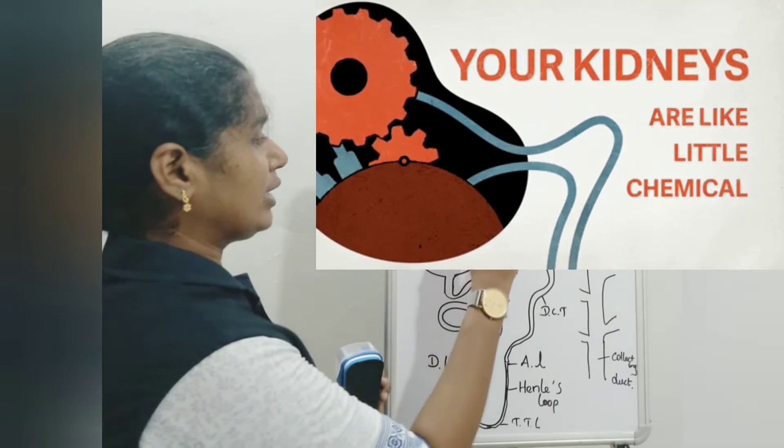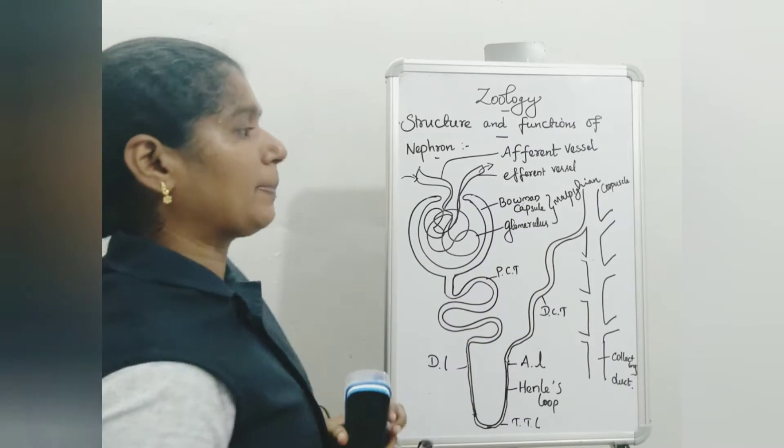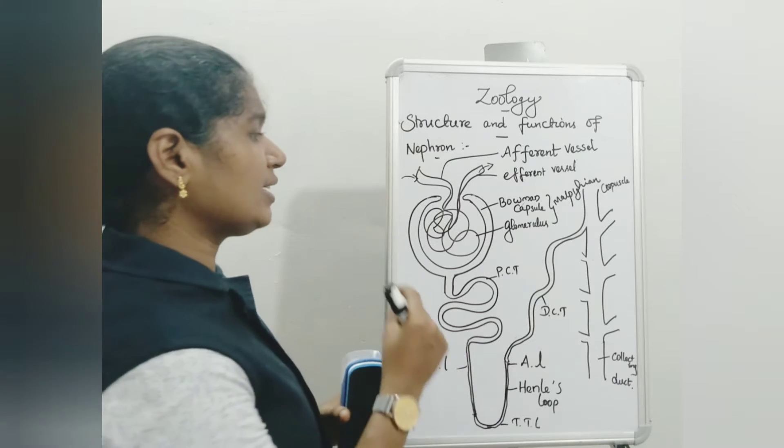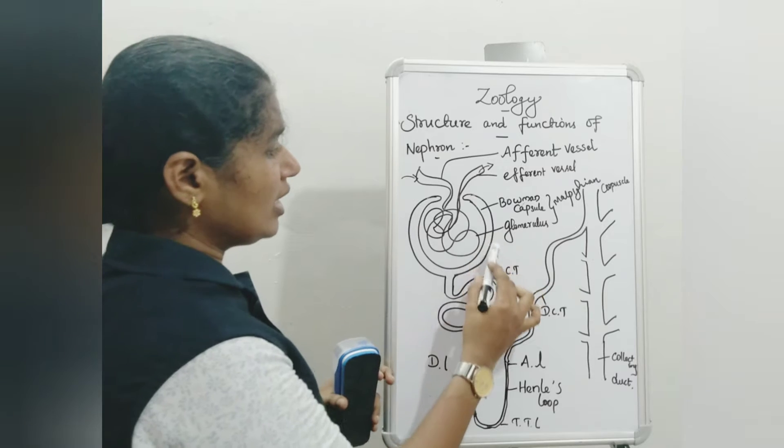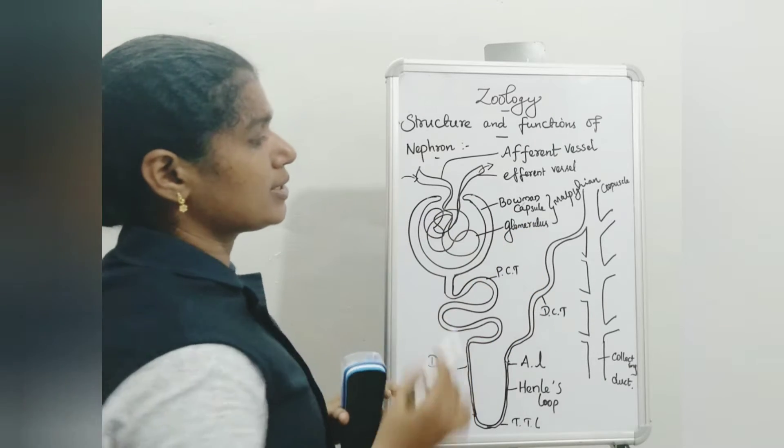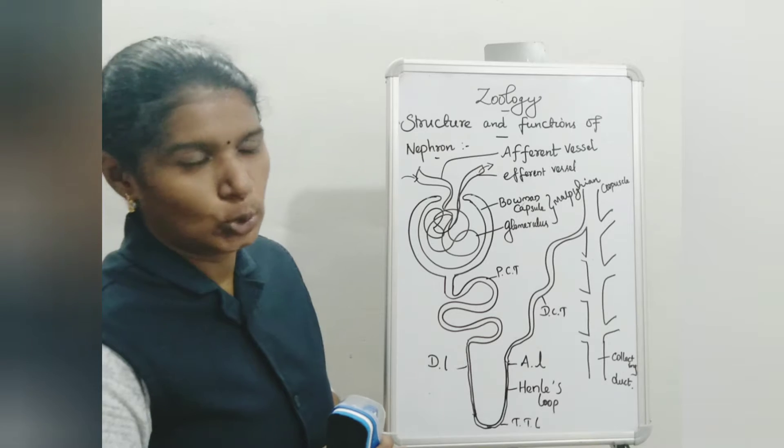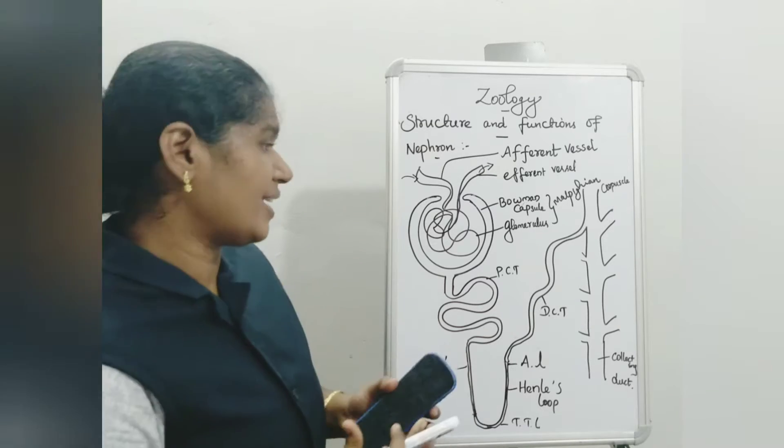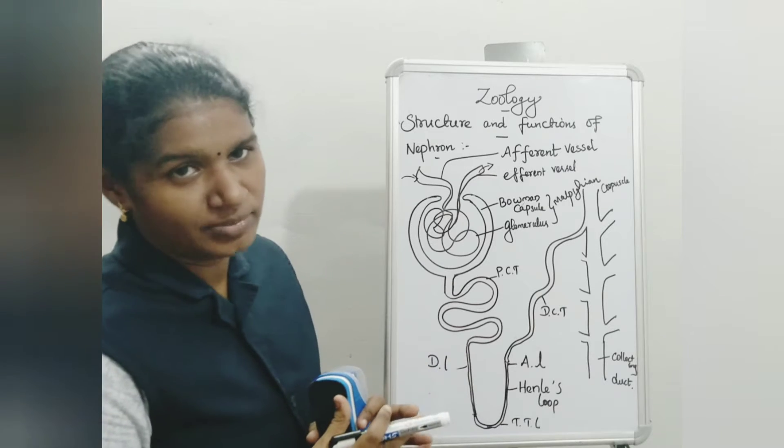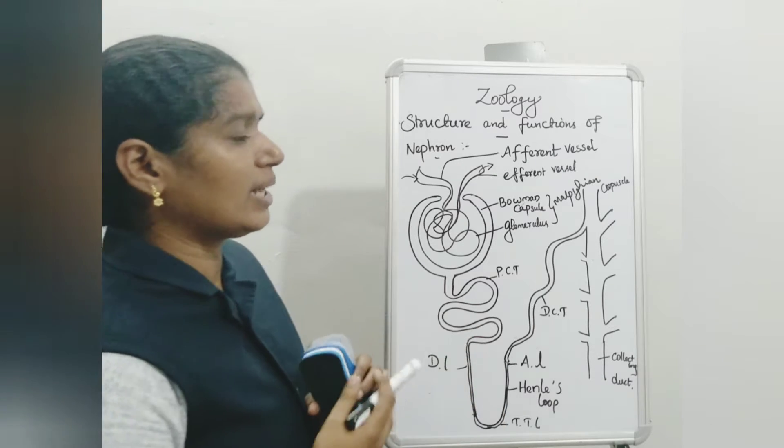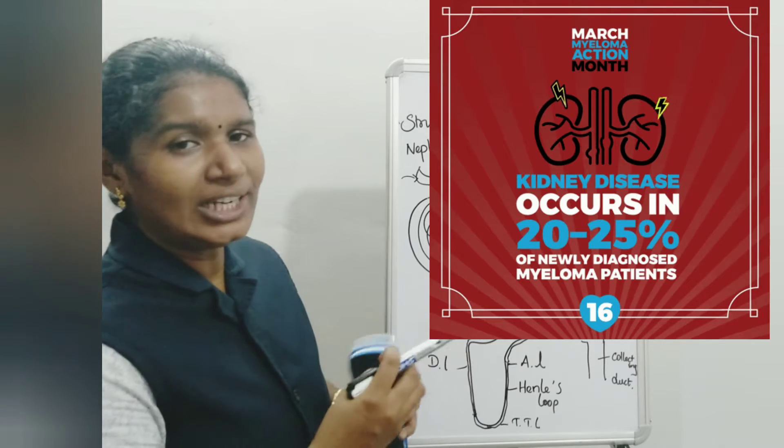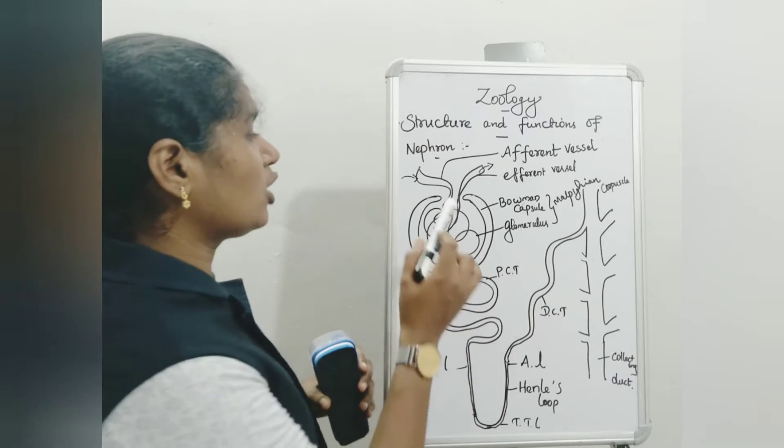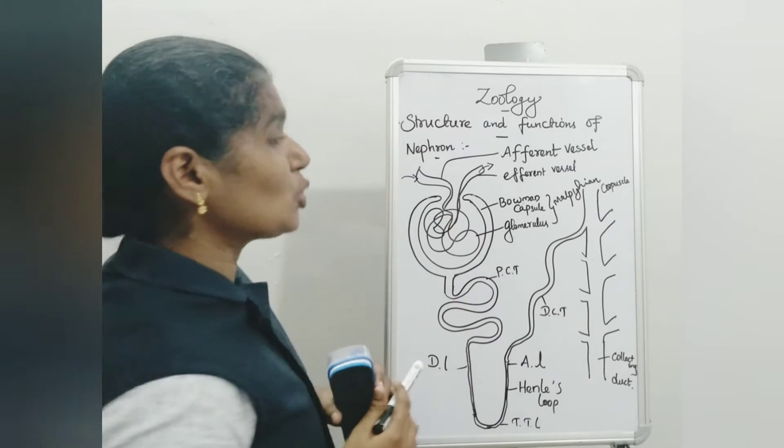So first we are going to learn about Malpighian corpuscle. The Malpighian corpuscle includes a cup-shaped structure called Bowman's capsule. Bowman's capsule is made up of a double wall layer. Inside the Bowman's capsule, it contains coiled blood vessels called glomerulus. The glomerulus is connected to blood vessels.